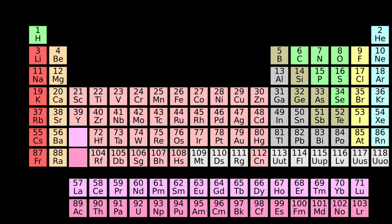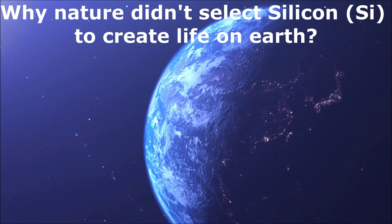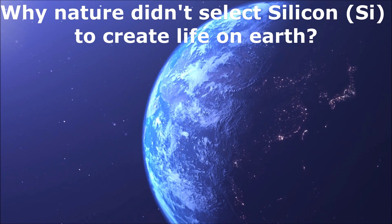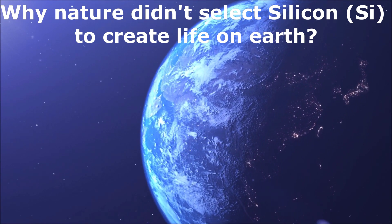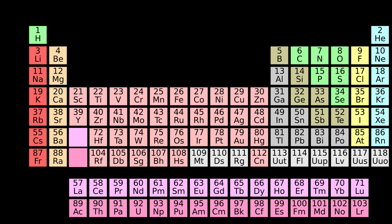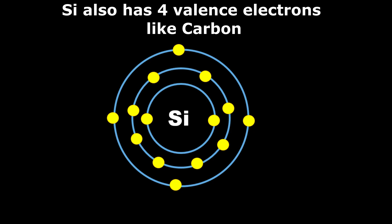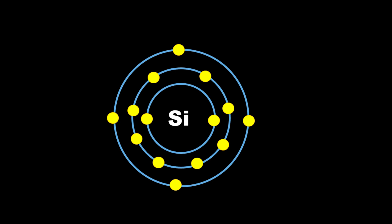The element whose properties closely resemble carbon is silicon. But still, nature didn't select it to create life on Earth. But why? Here is the answer. Silicon is in the same column as carbon in the periodic table, which means it also has 4 valence electrons. However, silicon's large atomic size and higher electronegativity makes it less versatile when it comes to forming bonds.